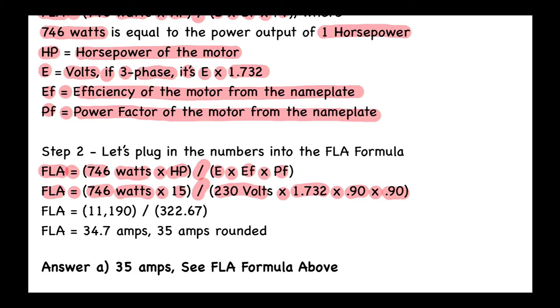Let's take it down to the next line. FLA is now equal to 11,190 divided by 322.67, so the FLA is now equal to 34.7 amps, and we're just going to round that up to 35 amps.